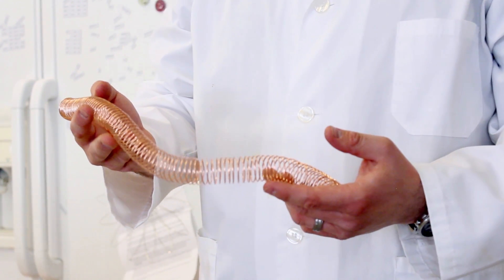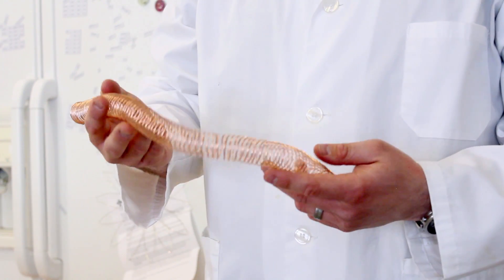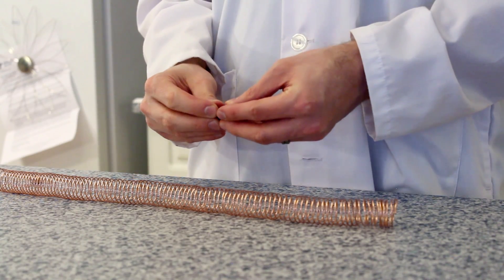Once you're finished coiling the copper wire, it should look something like this. With your coiled wire ready, take your triple-A battery and place rare earth magnets on either side of the battery.